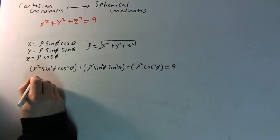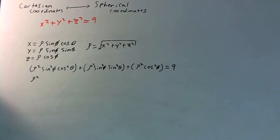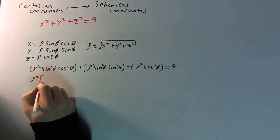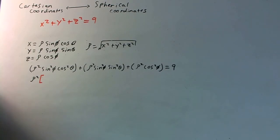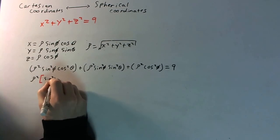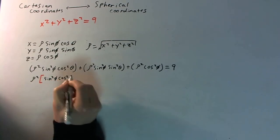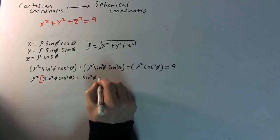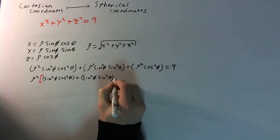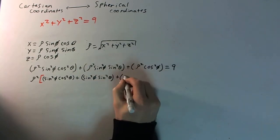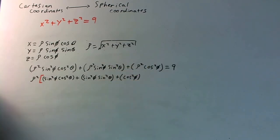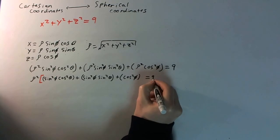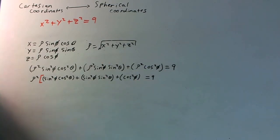So we have rho squared — let me use a different color here to signify factoring something out. We have a bracket, and what's left from the x squared term is sine squared phi cosine squared theta, plus sine squared phi sine squared theta, plus cosine squared phi, and this is going to be equal to 9.